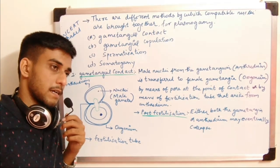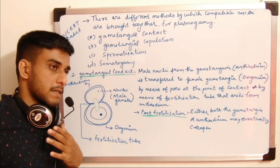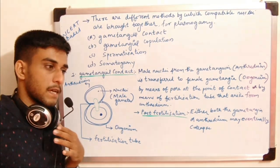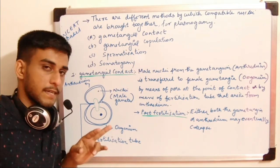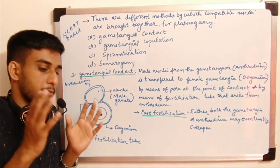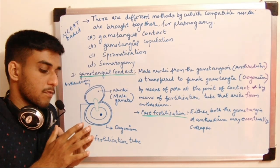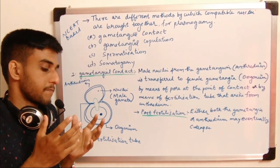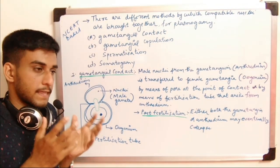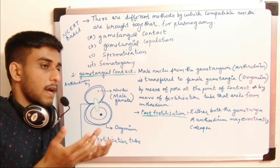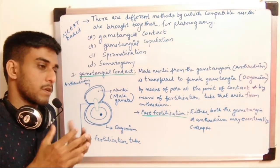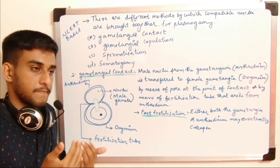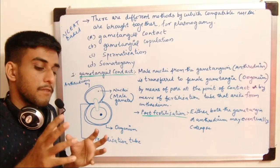In gametangial contact, two compatible gametangia — a male gametangium called the antheridium and a female gametangium called the oogonium — come together. The name of the female gametangium may vary according to the class of fungi. The male and female gametangia come together and fuse.